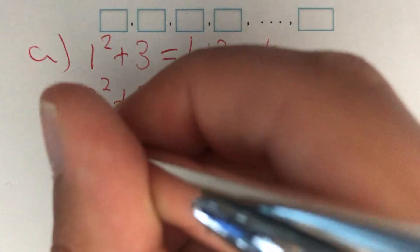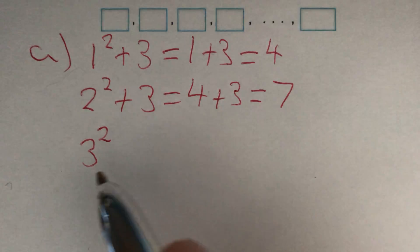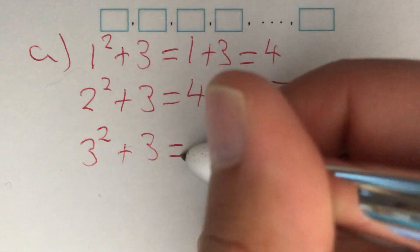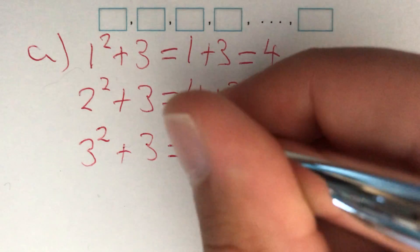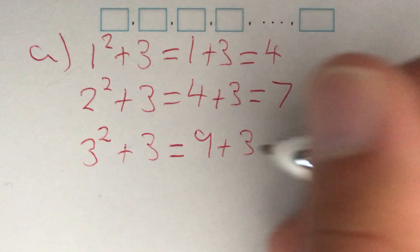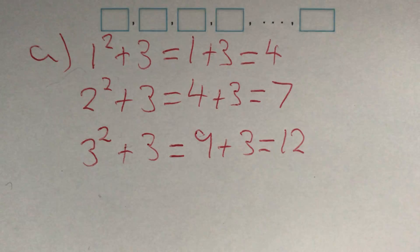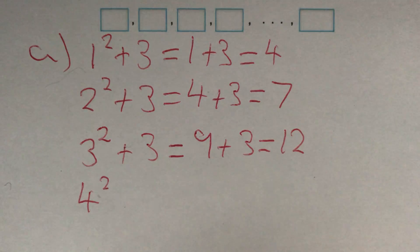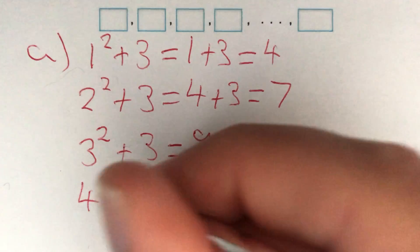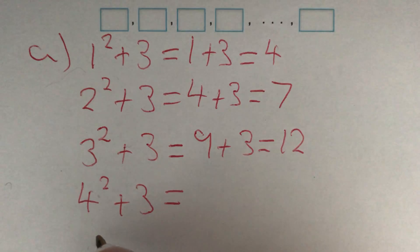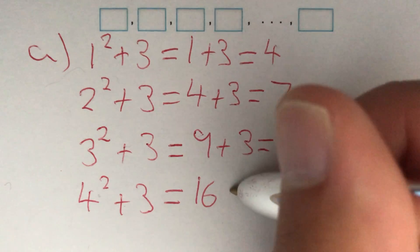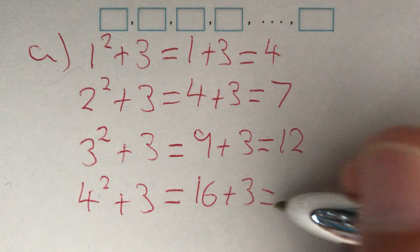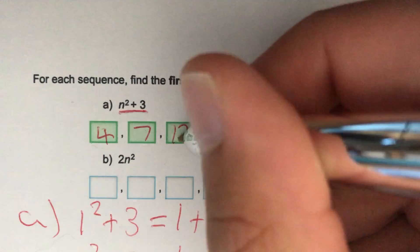Our third term, we replace n with 3. So 3 squared plus 3. 3 squared is equal to 9, and then we add 3, which gives us 12. Our fourth term, we replace n with 4. So 4 squared plus 3. 4 squared gives us 16, we add 3, and we get 19. So that's our first four terms: 4, 7, 12, and 19.